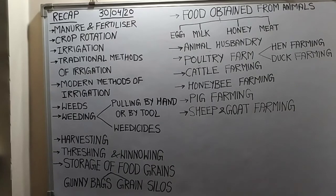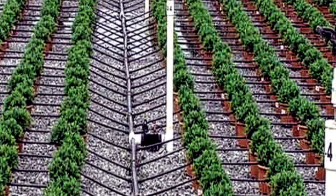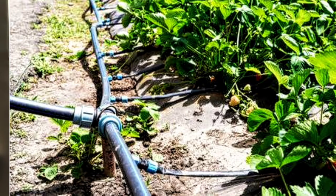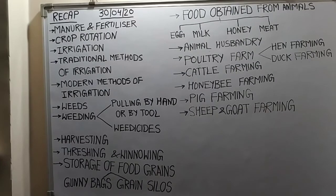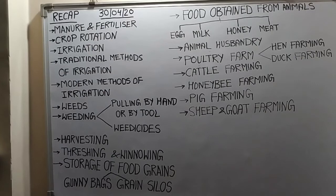The second modern irrigation method is a drip system. In drip irrigation there is a network of pipes — many small pipes run throughout the field attached to the main pipe, with holes through which water falls drop by drop at the position of the plant roots. This is the best technique for watering fruit plants, trees, and gardens. It saves a lot of water and is especially useful for regions where water availability is very poor.